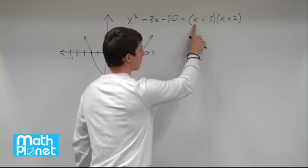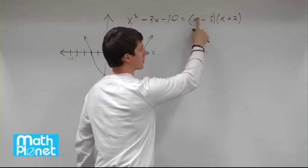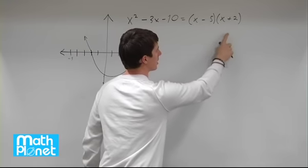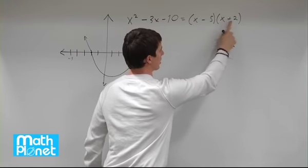So if we plug in positive 5 here that will give us 0 for this term and therefore 0 times something else is going to be 0.